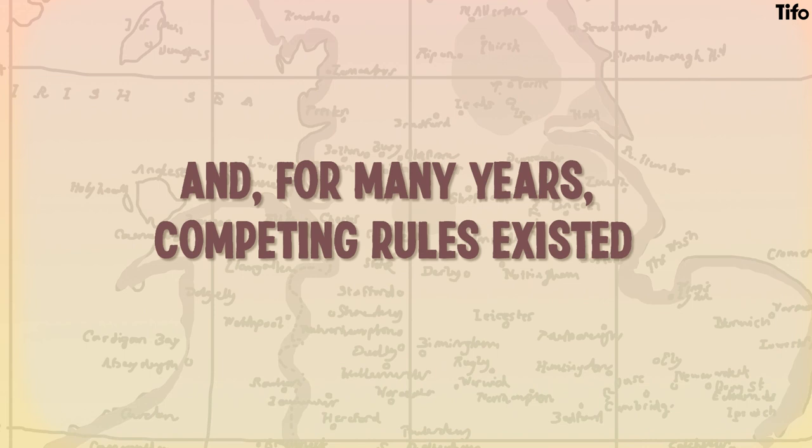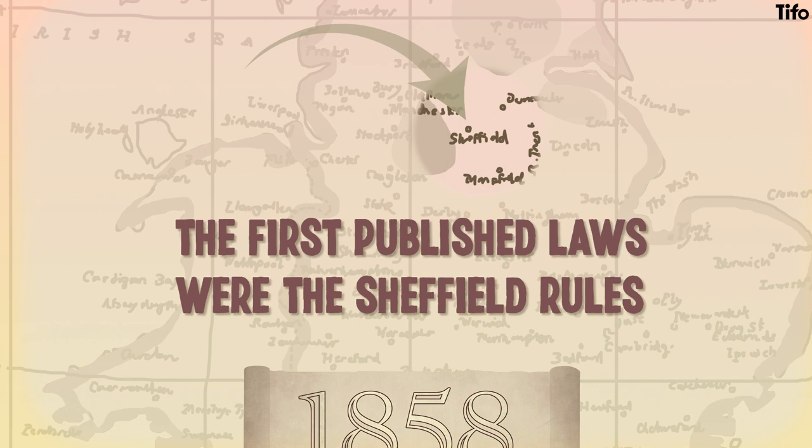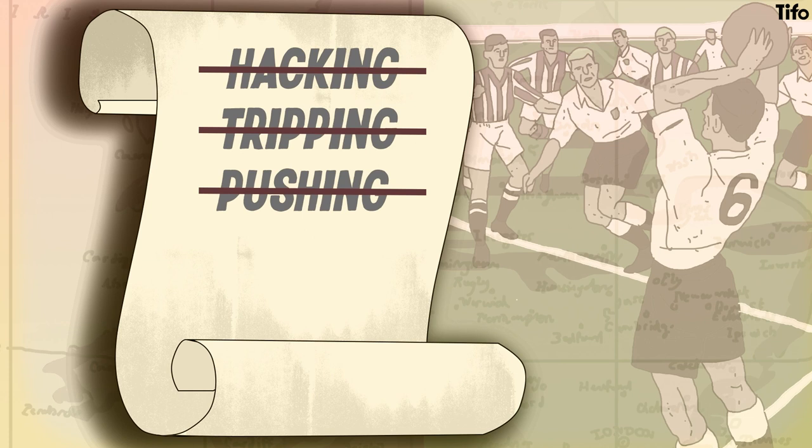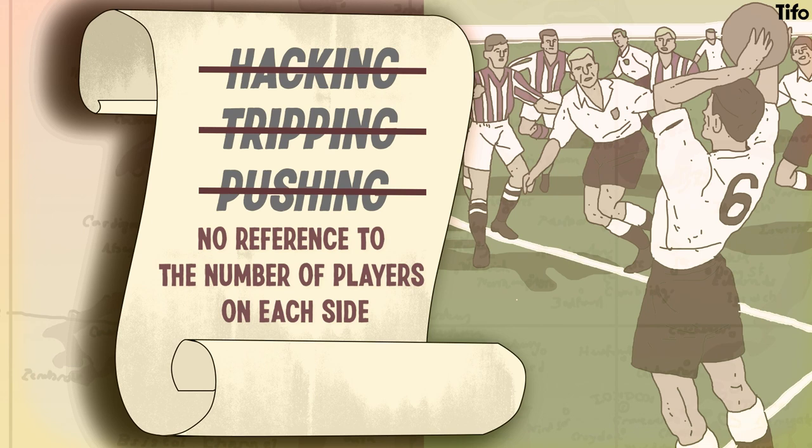The first published laws were the Sheffield rules, which date back to 1858. They outlawed hacking, tripping and pushing, and introduced a form of the contemporary throw-in, but made no reference to the number of players on each side. Nor did the rival FA rules, published in 1863.